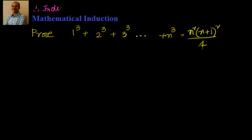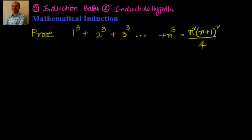Before proceeding, in any mathematical induction we have three steps. The first step is called the induction basis — proving that the statement is true for a particular value, generally n=1. The second step is to assume the given statement is true for n=k, which is called the inductive hypothesis. Then we have to prove that it's true for n=k+1, which is the induction step.